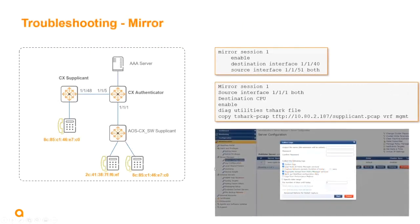Mirroring is very important for capturing EAPOL packets on both the dot1x supplicant and authenticator. You can enable the mirror with destination CPU, but make sure you don't have data traffic running — if it's a production network, use the mirror session on the data ports. For CPU capture, make sure it's not a production network.